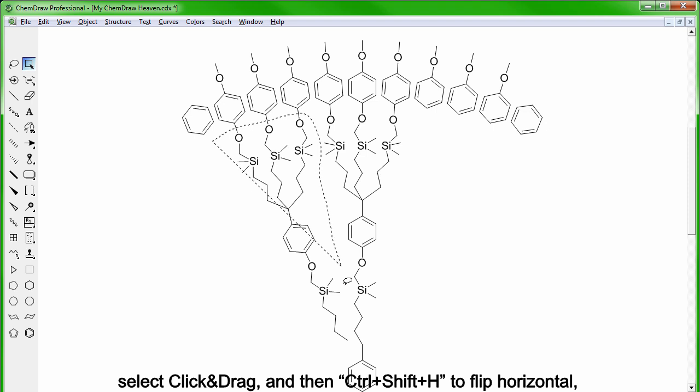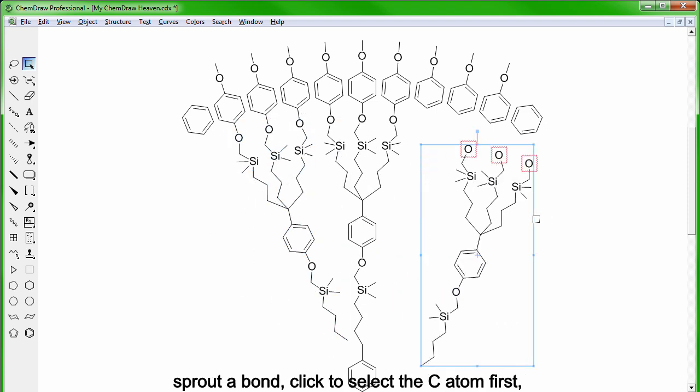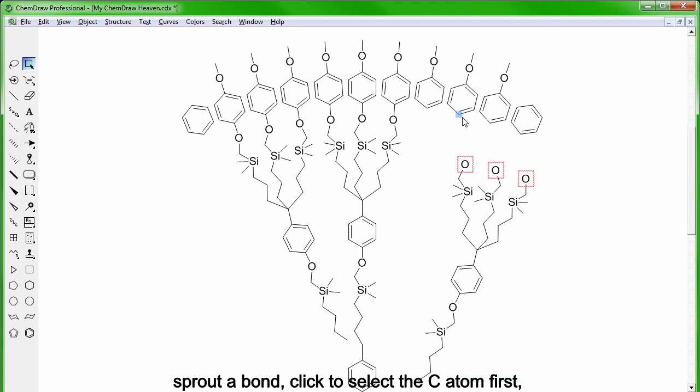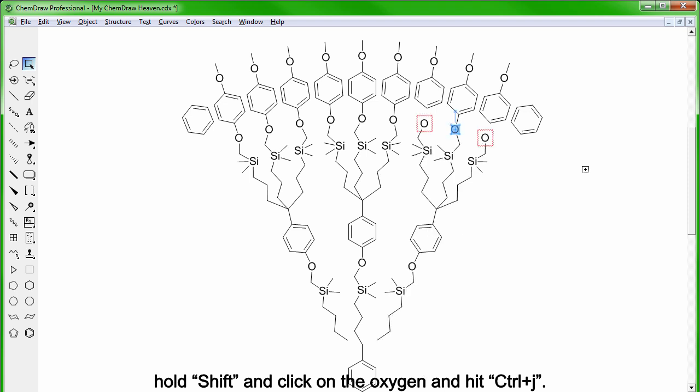Select, click and drag, then CTRL-SHIFT-H to flip horizontal, sprout a bond, click to select the carbon atom first, hold SHIFT and click on the oxygen and then hit CTRL-J. Once that is done, again sprout some bonds by pressing 0 and then stitch the bottom parts together.